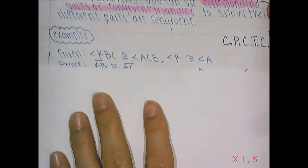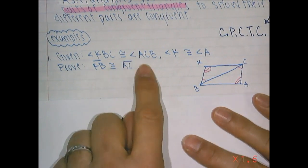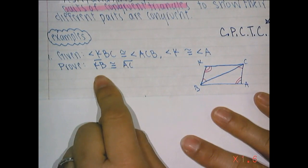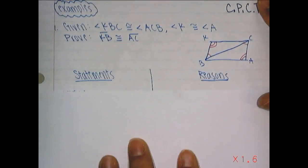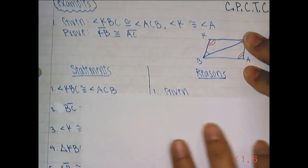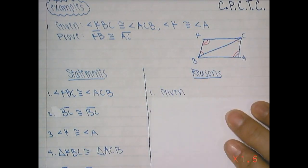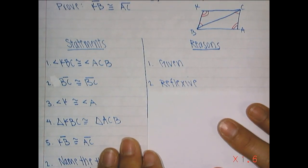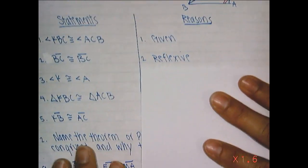Let's look at an example. We have angle KBC is congruent to angle ACB, and angle K is congruent to angle A. We want to prove that side KB is congruent to side AC. So angle KBC is congruent to angle ACB. And then BC is congruent to BC — well, it's the same thing, like looking in the mirror, you see your reflection, but it is reflexive. Angle K is congruent to angle A — that's because it was in the given.